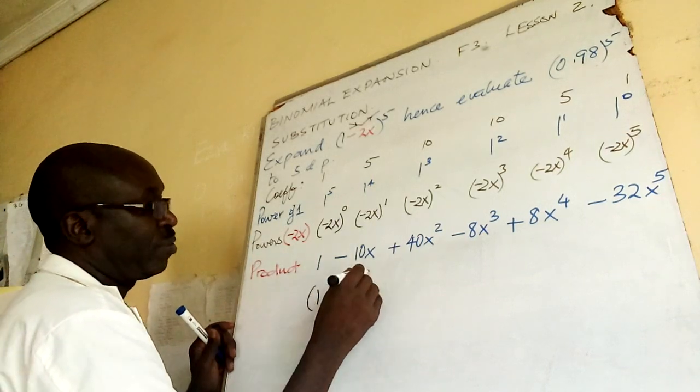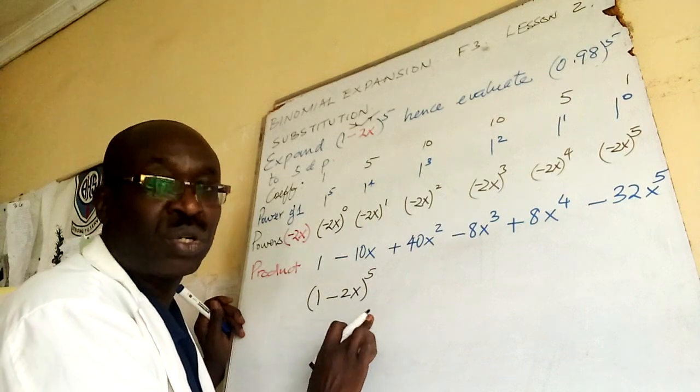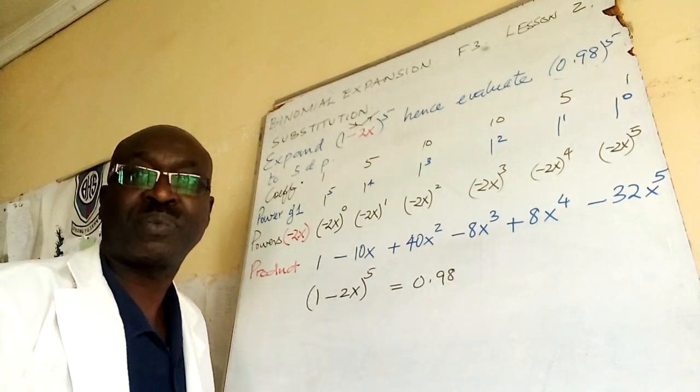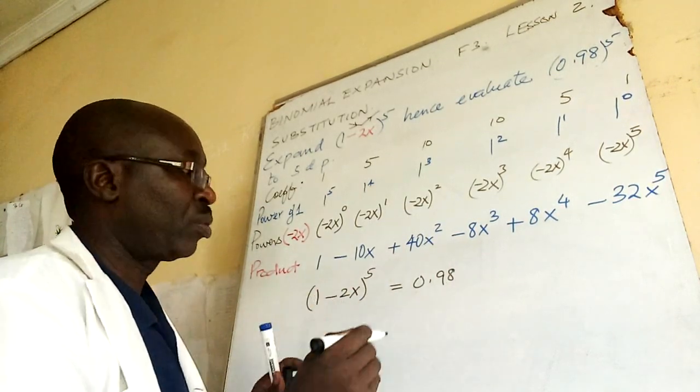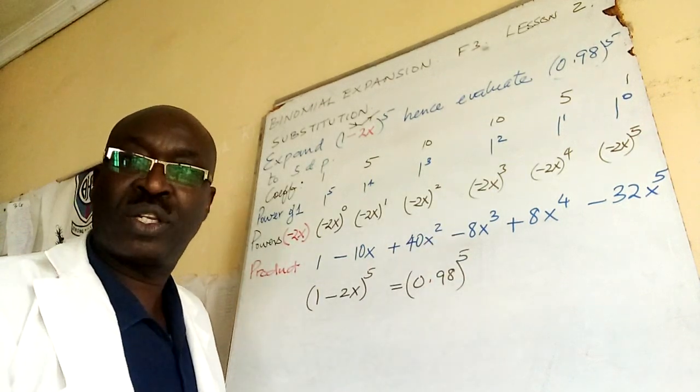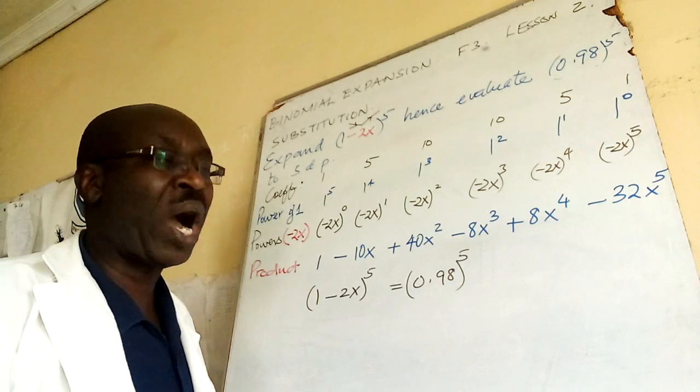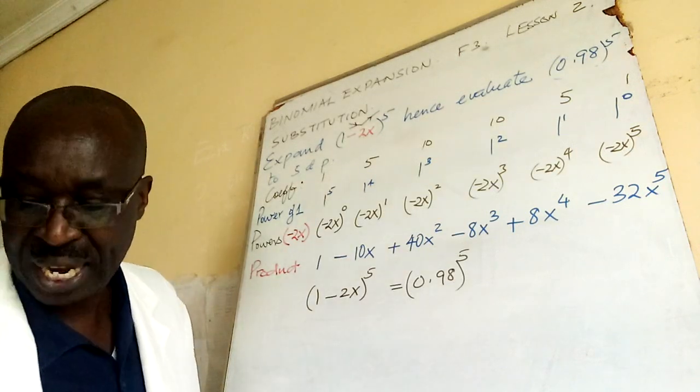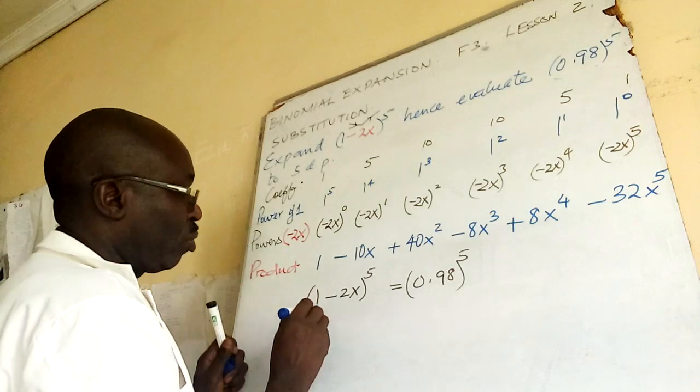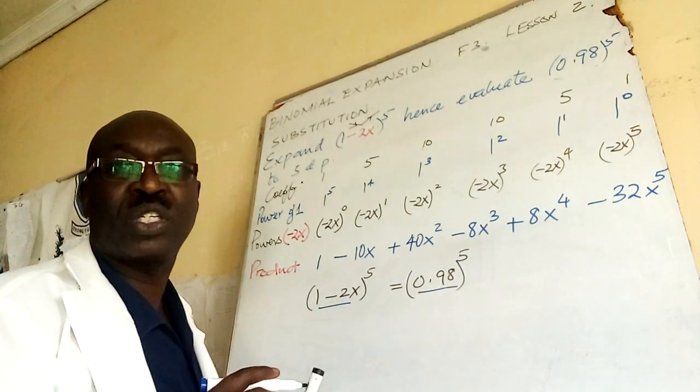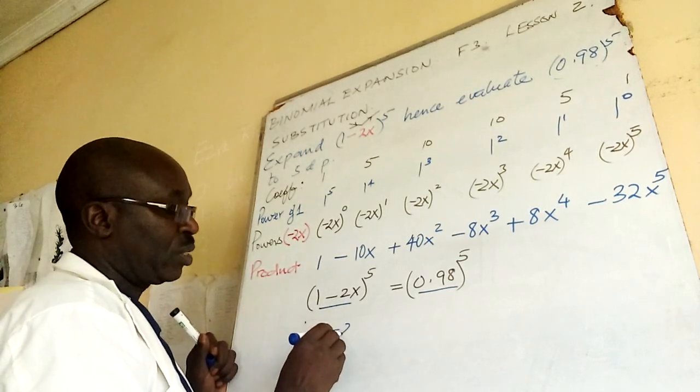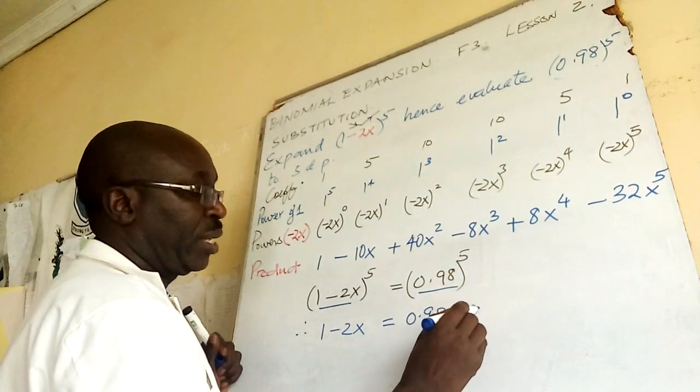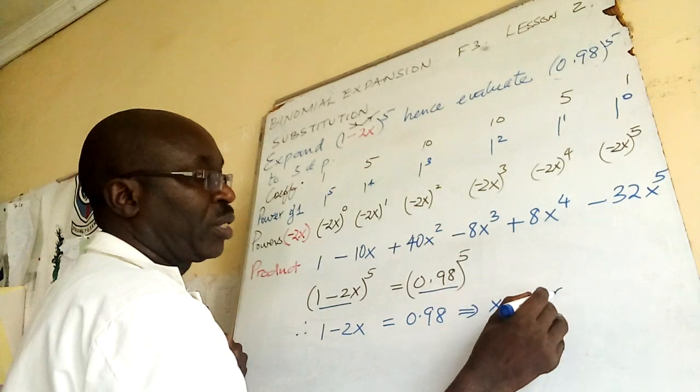Now we are told that 1 minus 2x to power 5, we use this expansion to evaluate 0.98 to power 5. You equate the two and then work with the inside elements. Therefore, 1 minus 2x must equal 0.98, implying x is equal to 0.01.